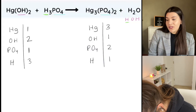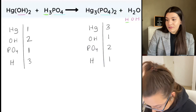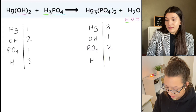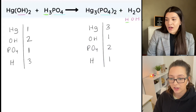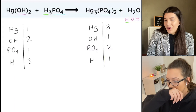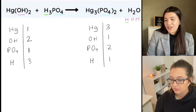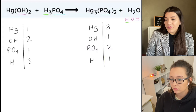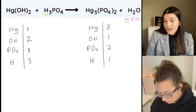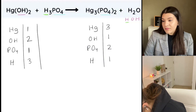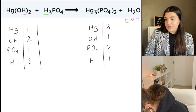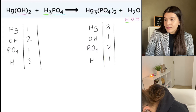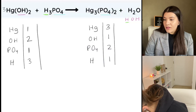Alright, what do we want to start balancing? We're gonna save the OH and the H for the end. Does it matter whether I start with the PO4 or the Hg? It honestly doesn't. I would start with Hg just because it seems easier since it's just one element versus a polyatomic ion. But it honestly doesn't matter. We'll do Hg — so we need to put a three over here.